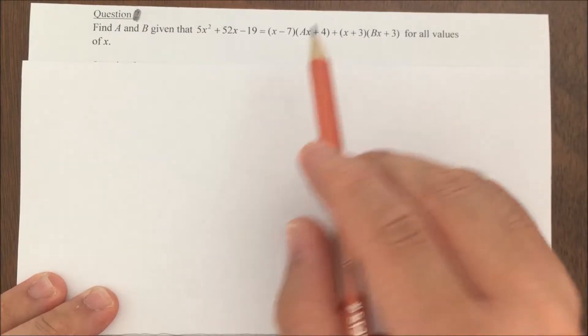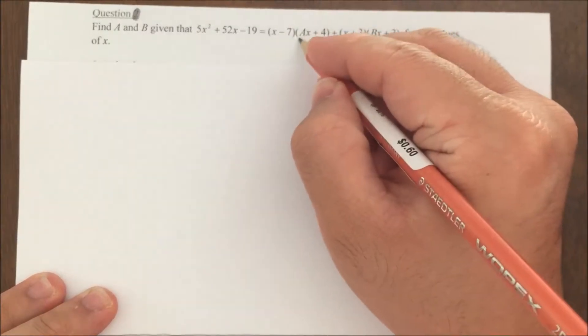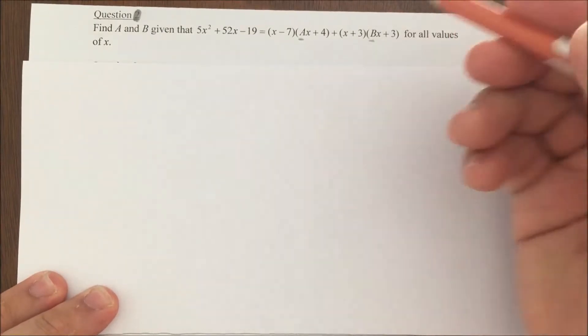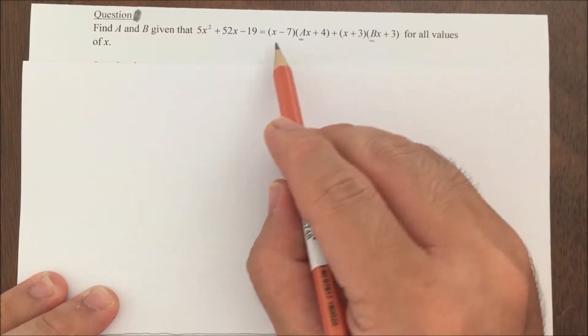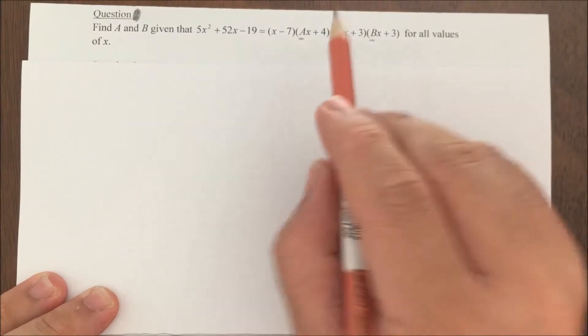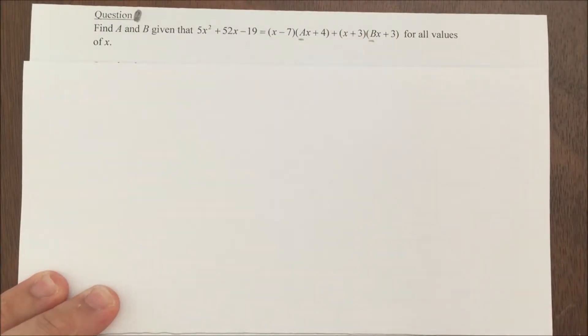For this question, can you see that we want to find the values of a and b which is here and here? So my strategy - you must always have a strategy - is to expand this and later compare the coefficients. So how are we supposed to go about doing it?